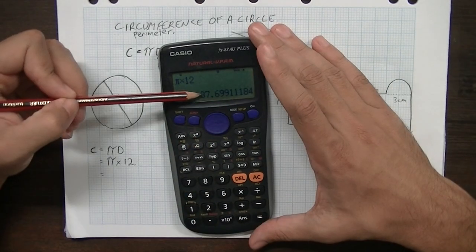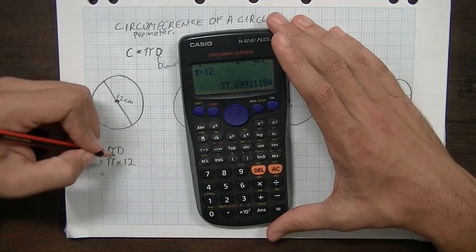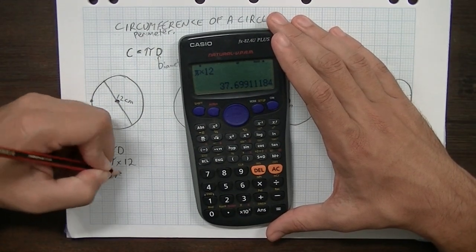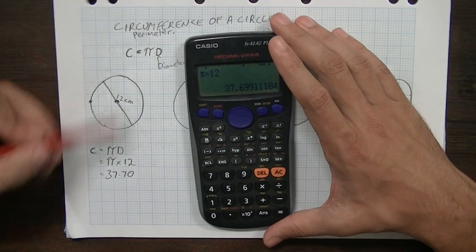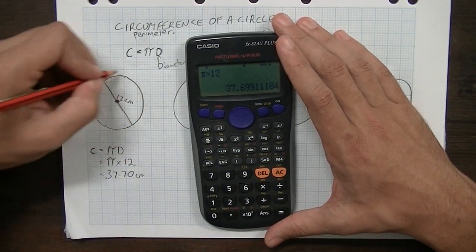37.699. Now, if I round that to two decimal places, it's going to be 37.70. So that's our perimeter or our circumference of that circle.